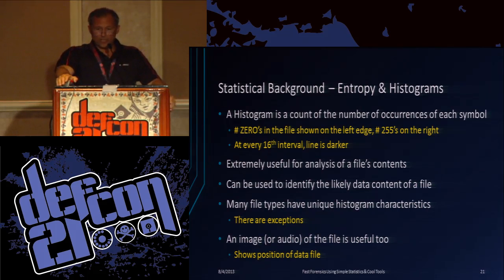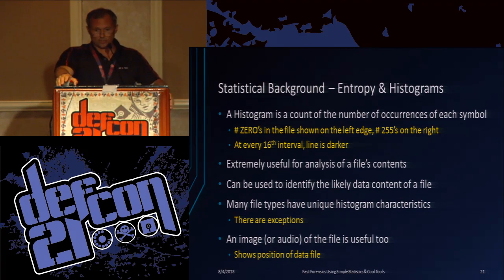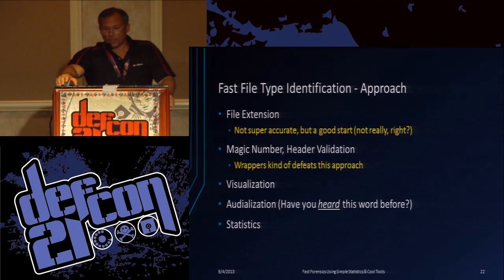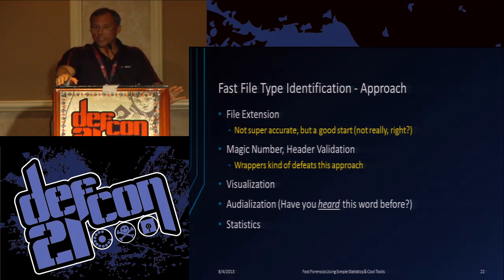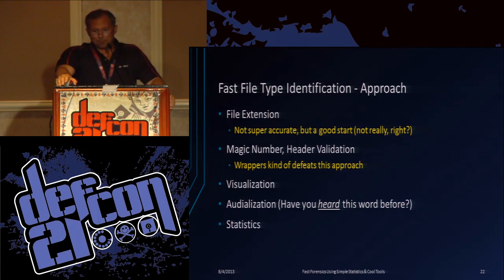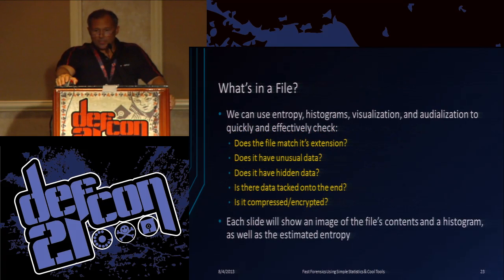The histogram: on the left side of the chart is the zero count and on the right side is the 255 count. The darker lines are at 16-value intervals — so at 16 and 32 the line is a little darker, just to break it up. Many file types have unique histogram characteristics and you can identify them very quickly. Here's how you identify a file: you look at the extension, but that doesn't mean anything. You look at the magic number — that may mean something. We can apply a visualization — that's what this tool does — and also an audioization, which is a very strange word but it's actually out there. Then statistics. So we check: what's in the file? Does it match the extension? Does it have unusual data, hidden data, appended data? Is part of it compressed? We can tell a lot.